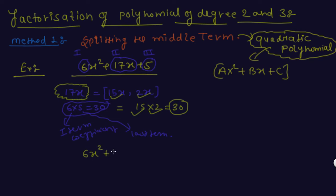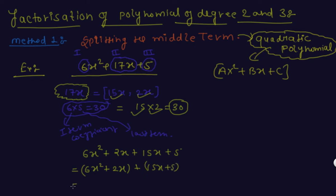Now we rewrite the quadratic polynomial as 6x² + 2x + 15x + 5. We take 2x as common from the first bracket, leaving 3x + 1, and then take 5 as common from the second bracket, also leaving 3x + 1.